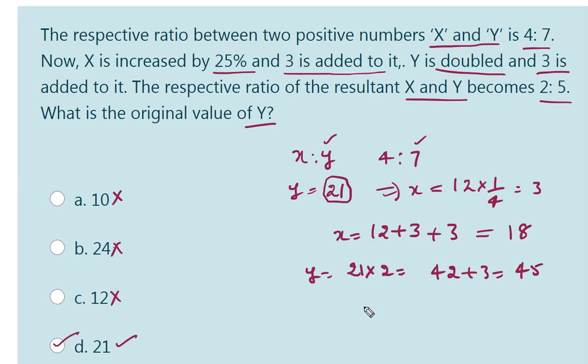And what is the ratio of X is to Y now? 18 is to 45. 9 times 2, 9 times 5. So 2 is to 5. So it has come correctly. That is why whatever the answer we guessed, that is correct.